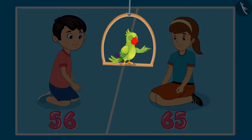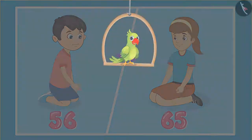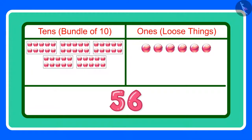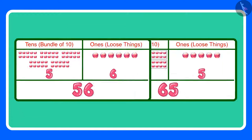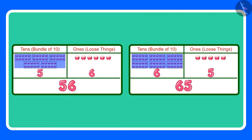Children, what do you think? Are 56 and 65 equal? Come, let us see. 56 means 5 tens and 6 ones. And 65 means 6 tens and 5 ones. The two numbers have different tens and ones. This means that 56 and 65 are not equal.